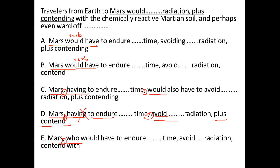Eliminate D. Similarly in E, after the second comma we have 'avoid,' but again if you look at it, it says 'who would have to endure, avoid, contend' — that's part of the list. That means after the second comma we don't have a verb. So the verb is missing in E as well.